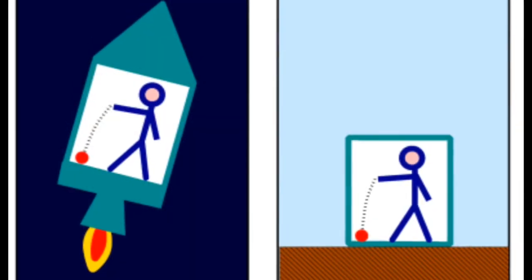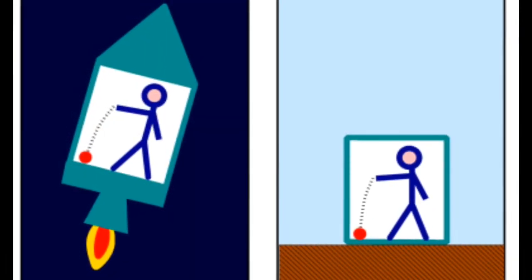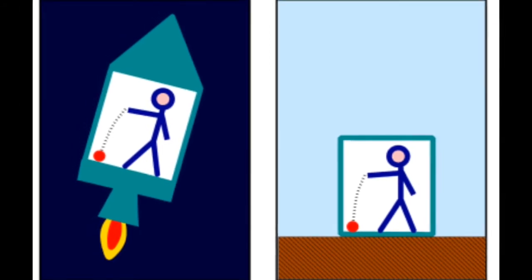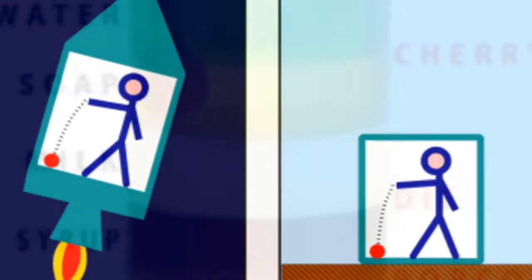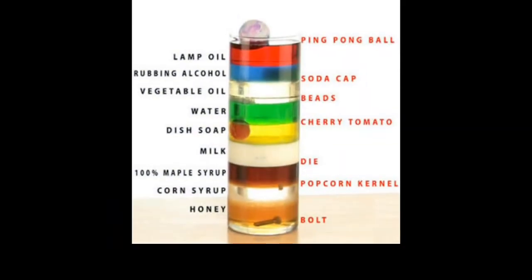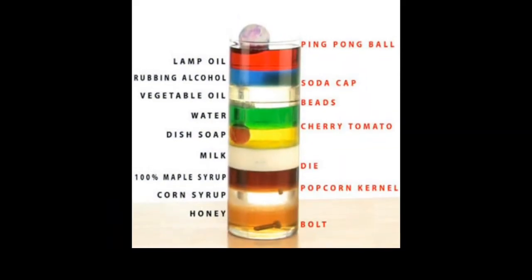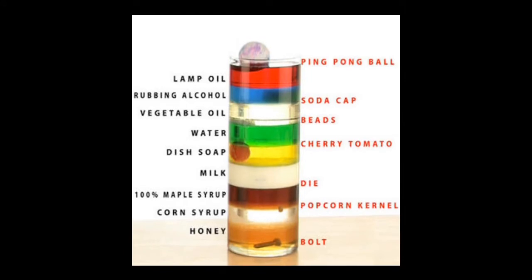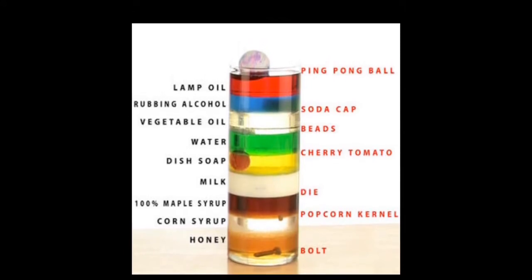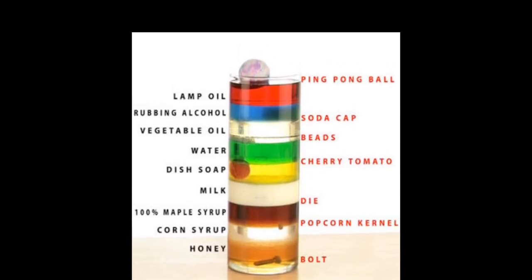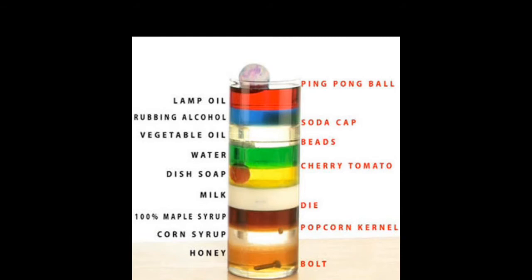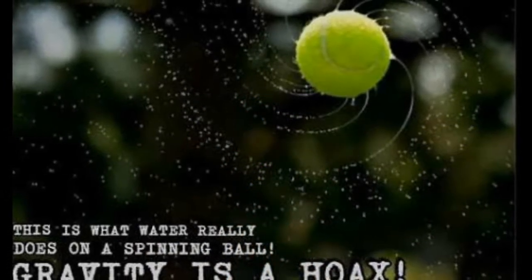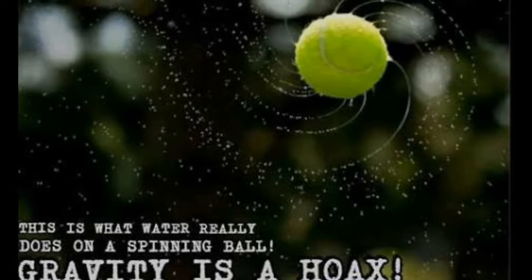According to Flat Earth theory, gravity is not the main force keeping us on the ground. Instead, there is a force that produces identical effects as observed from the surface of the Earth. This force is known as Universal Acceleration, abbreviated as UA. Objects on the Earth's surface have weight because all sufficiently massive celestial bodies are accelerating upward at the rate of 9.8 meters per second squared.